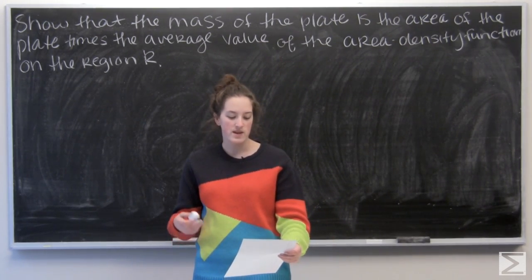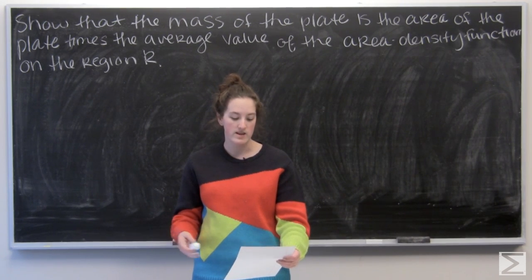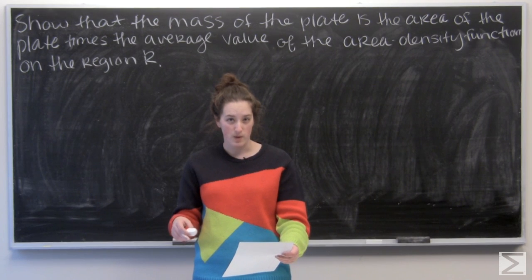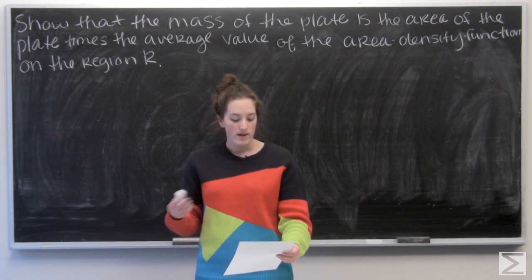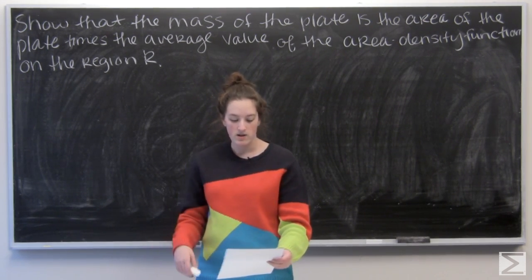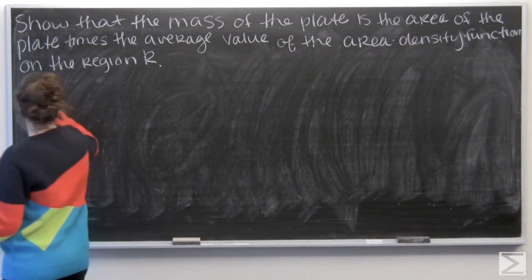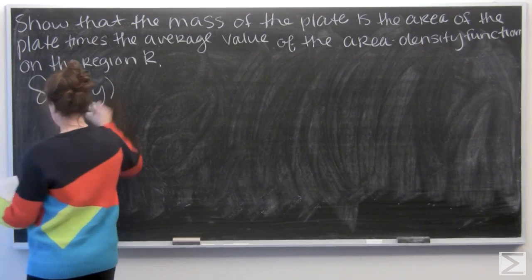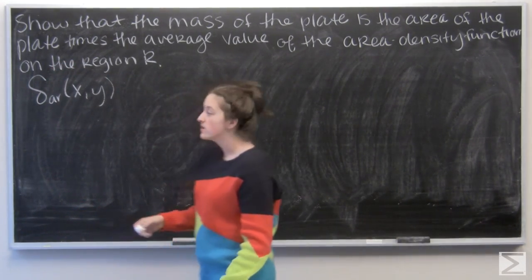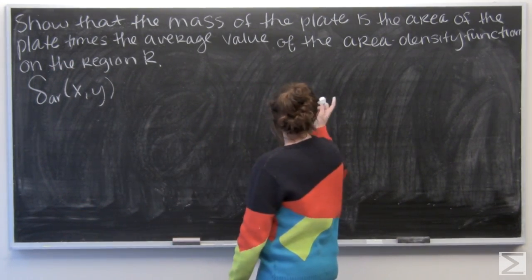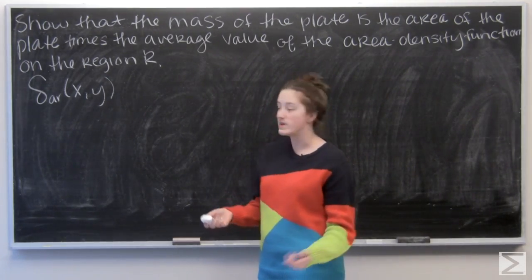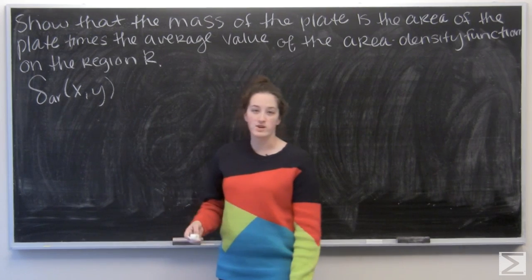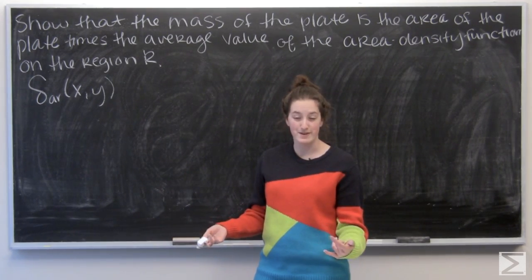It asks us to assume that a region R in the xy plane is occupied by a thin metal plate, and that at each point (x,y) on the plate, we have an area density function. And then we're asked to show that the mass of the plate is the area of the plate times the average value of this area density function over the region.